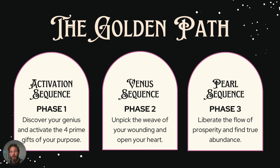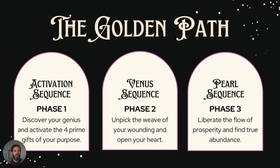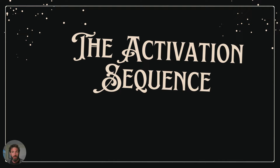Your purpose — the last sphere of the activation sequence — also opens to your purpose in the Venus sequence and into your relationships, because this wisdom is holographic in nature. The last phase is the pearl sequence, which is liberating prosperity. There's a big difference between prosperity and wealth. It's easy to build wealth, and we can start to build something without an open heart, but it always ends in catastrophe.